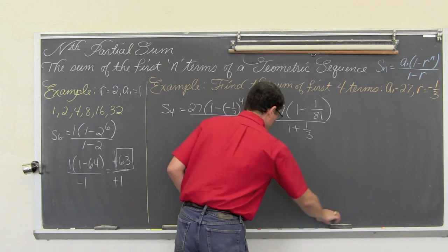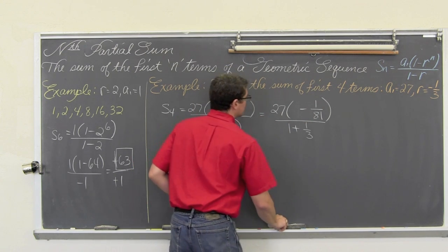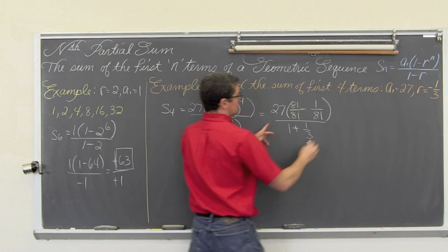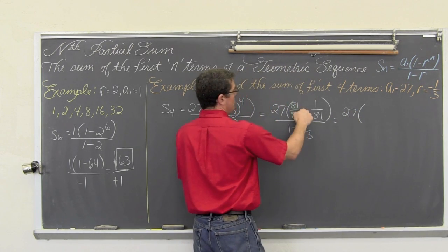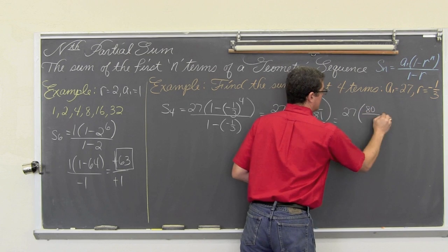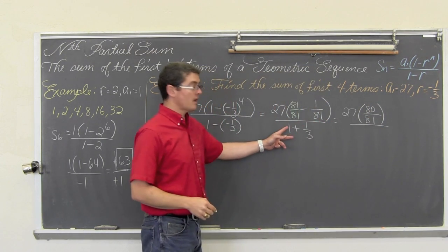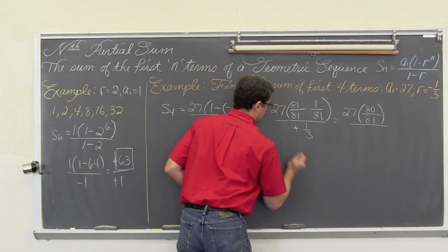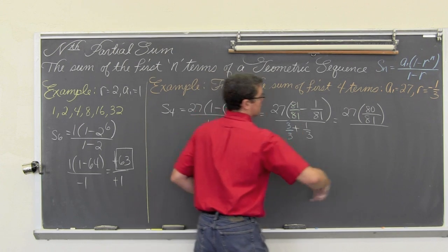We need a common denominator, so we are going to turn the 1 into 81 over 81. And we get 27 times 81 minus 1 is 80, over our common denominator of 81. And that is all over, again we need common denominators, so we are going to change that to 3 over 3, and get 4 thirds.